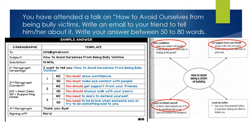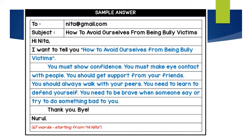Remember, you have to write it in email format. Usually there's a 'To' and 'From,' but this time there's only 'To' — for example, anita@gmail.com. Subject is the title: 'How to avoid ourselves from being a bully victim.' Then: 'Dear Nita,' — remember, we always use 'Dear' followed by your friend's name, then a comma. Skip one line. Write your intro: 'I want to tell you how to avoid bullying.' Then start your paragraph: 'You must show confidence. You must make eye contact with people. You should get support from your friends. You should always walk with your peers. You need to learn to defend yourself. You need to be brave when someone says or does something bad to you.' Then skip another line, write your signing off — 'Thank you, bye' — then your name. All of this is 67 words.